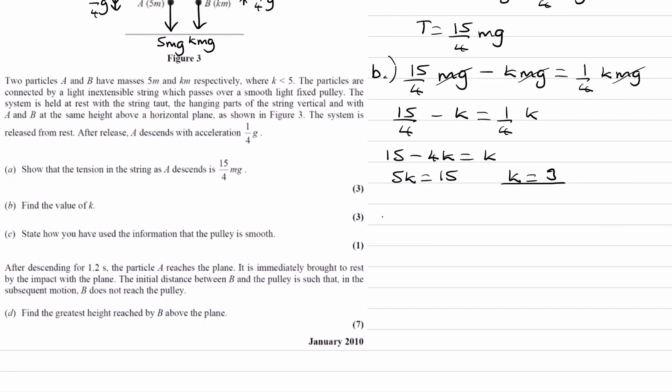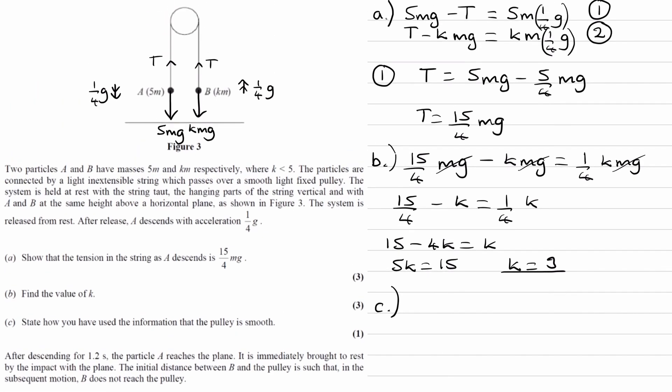For part C, state how you've used the information that the pulley is smooth. So I've considered the tension on both sides of the string to be the same, T, T.